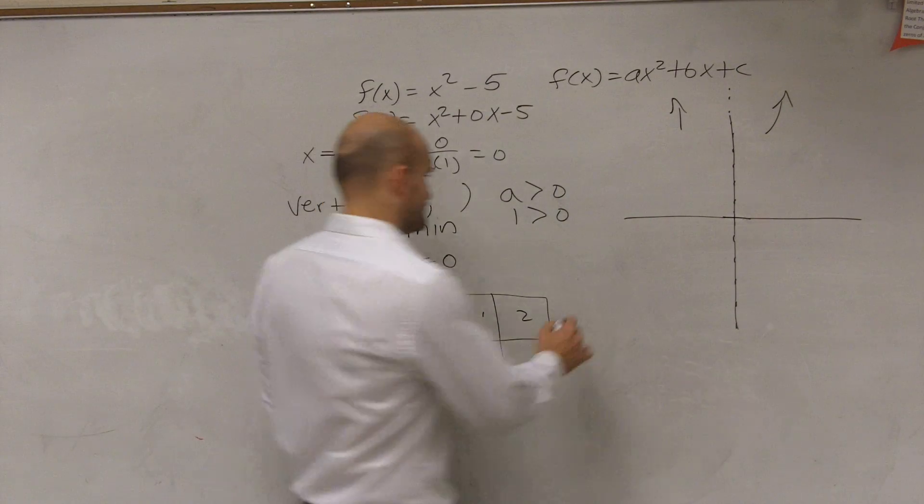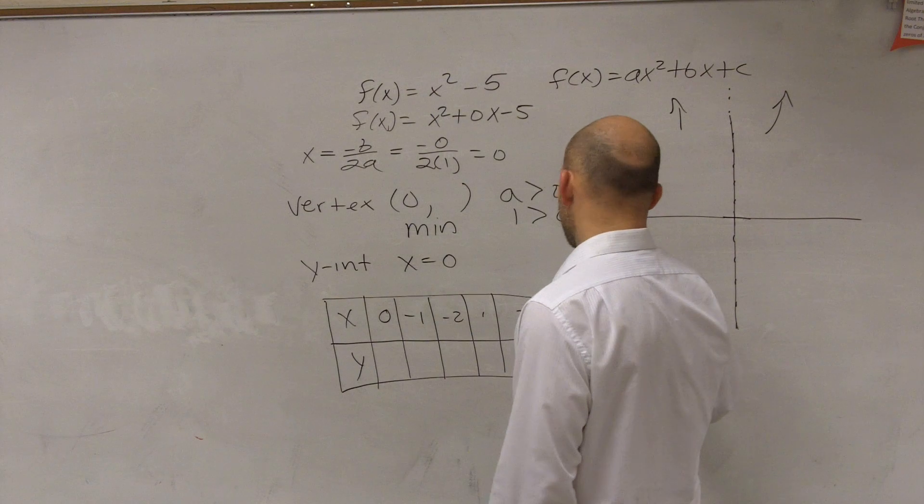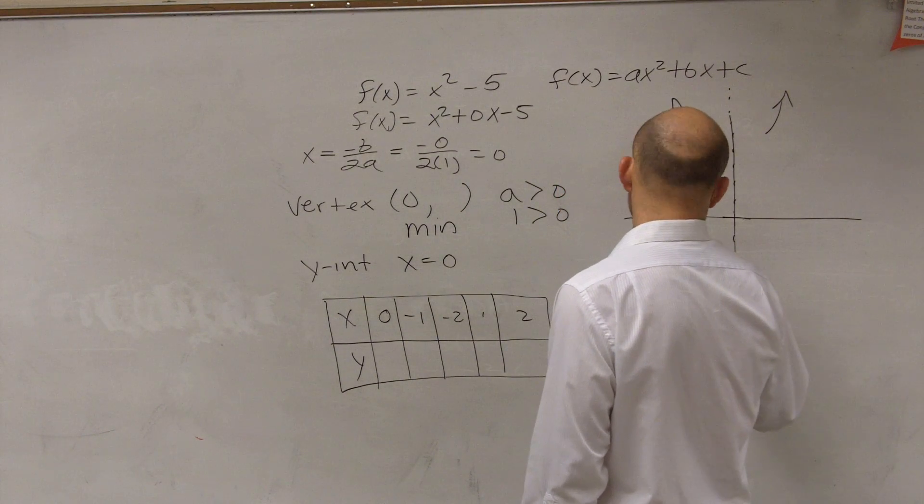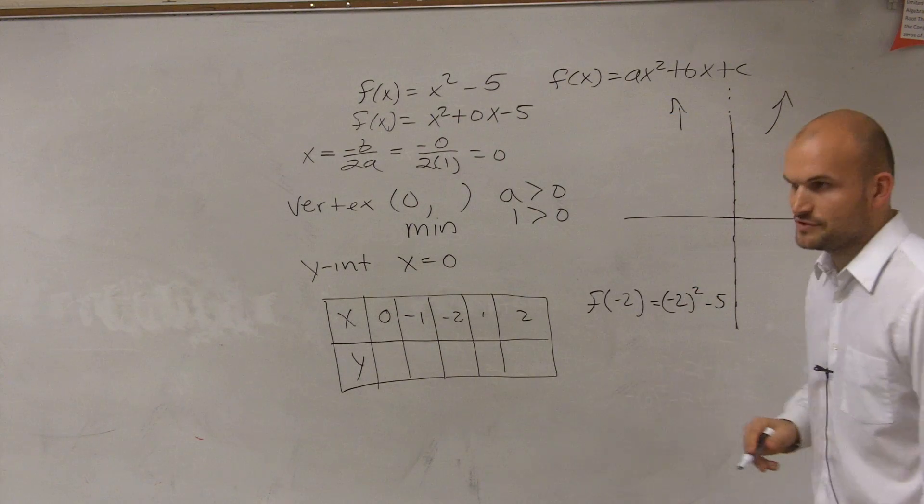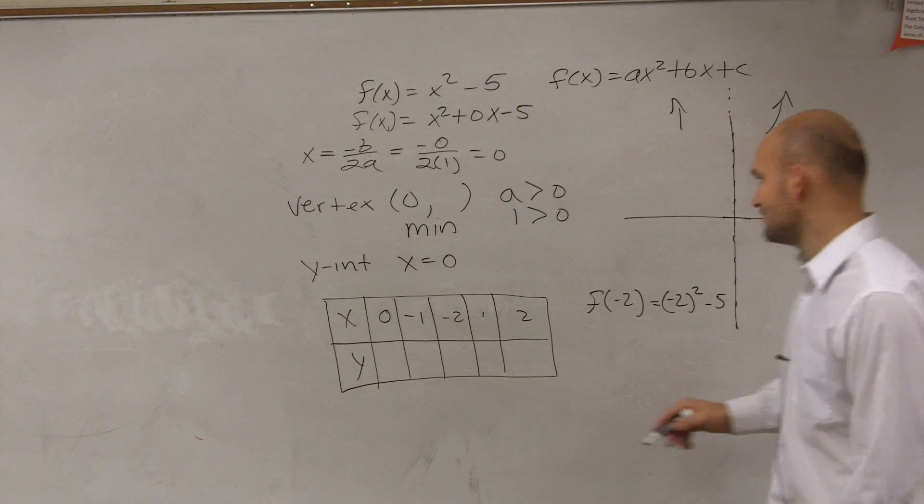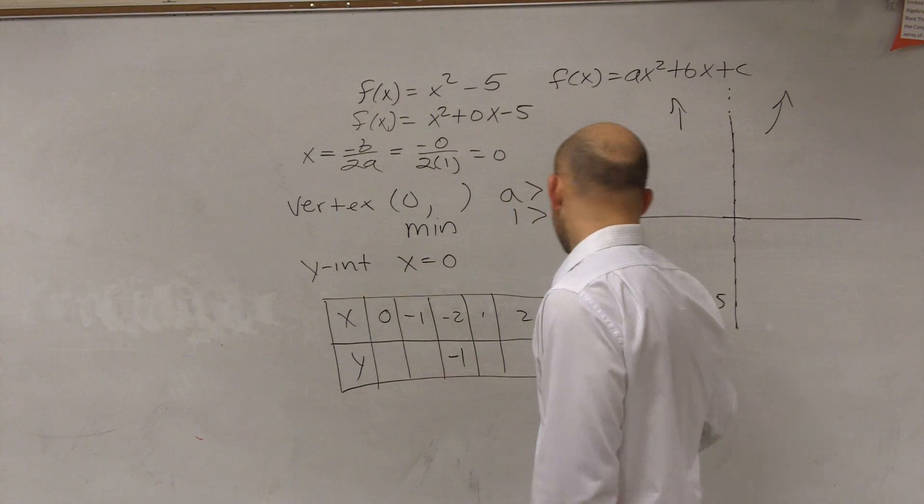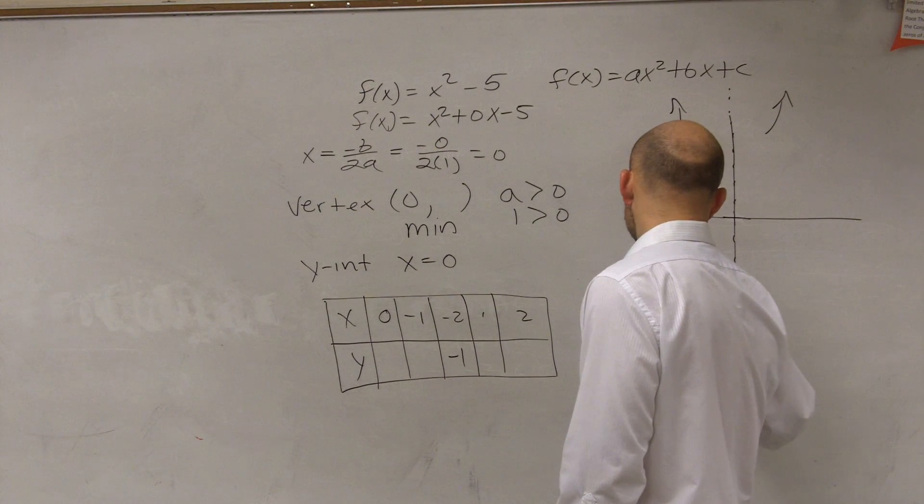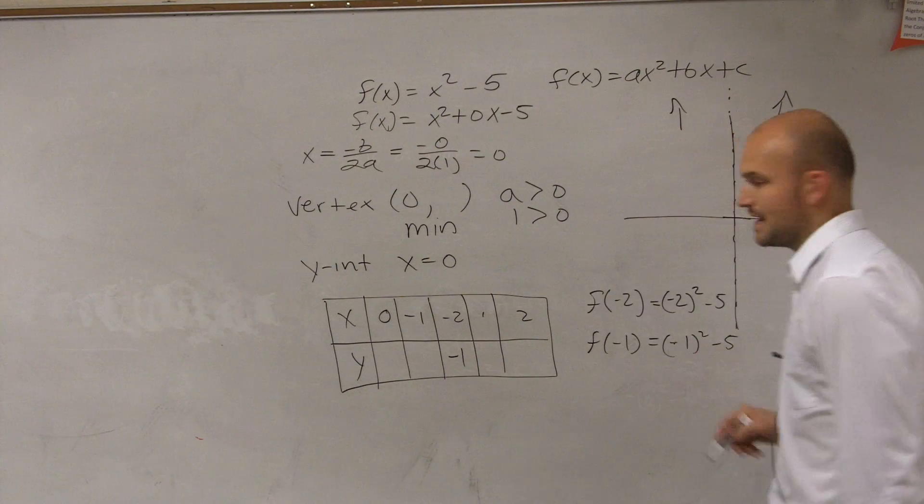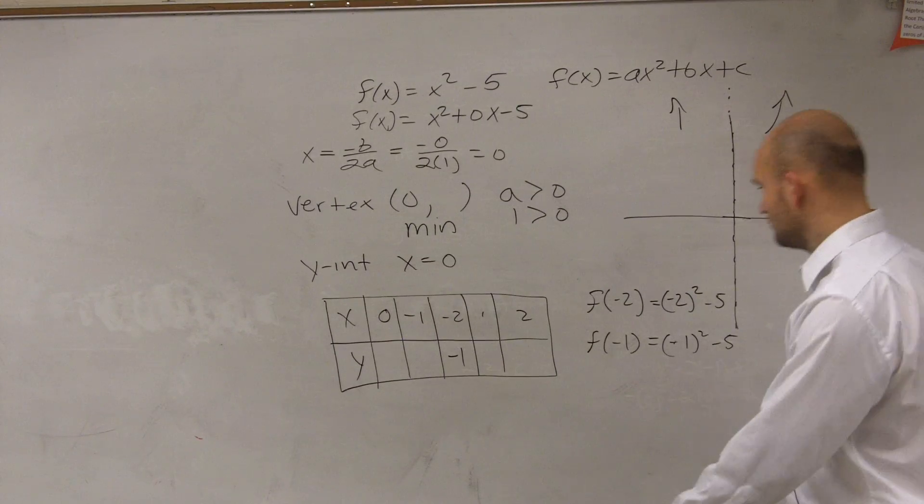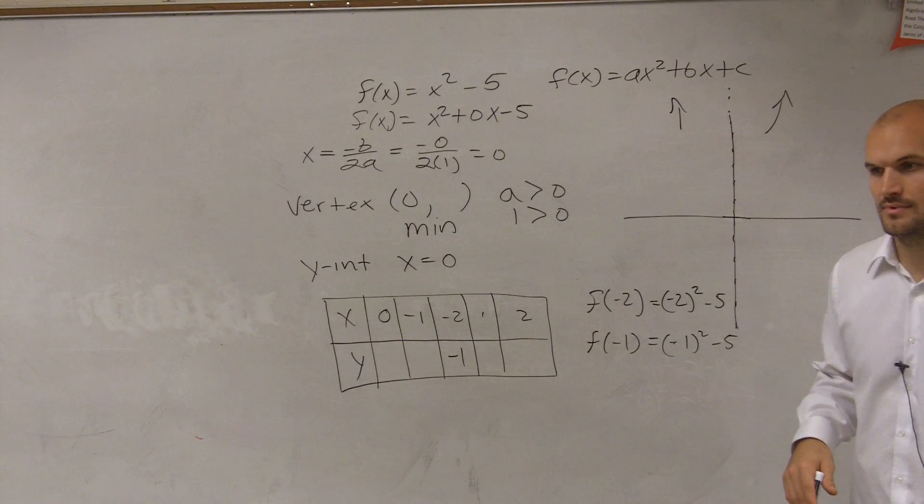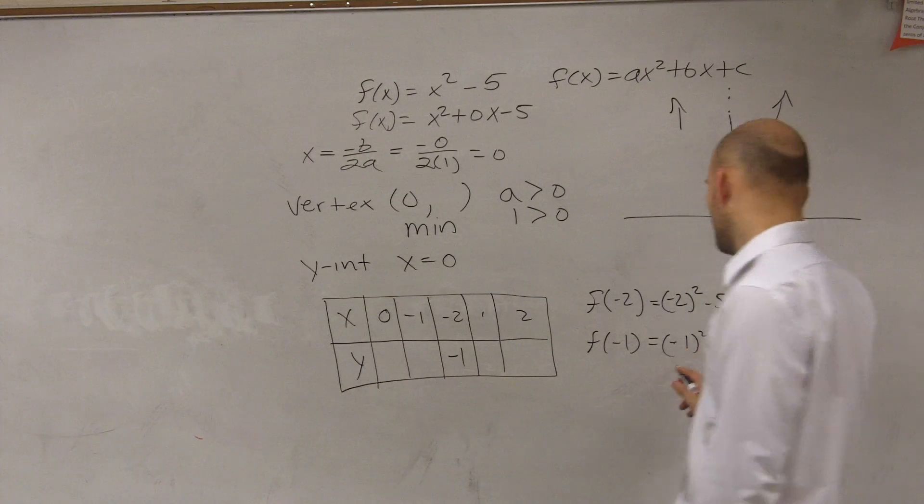So f of negative 2 equals negative 2 squared minus 5. Negative 2 squared is 4. 4 minus 5 is negative 1. f of negative 1 equals negative 1 squared minus 5. Negative 1 squared is positive 1. 1 minus 5 is negative 4.